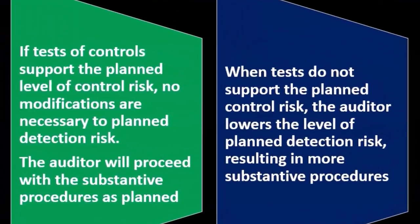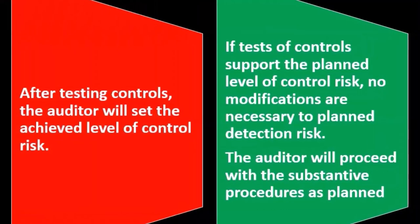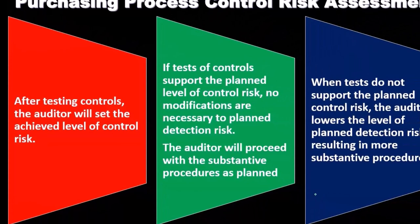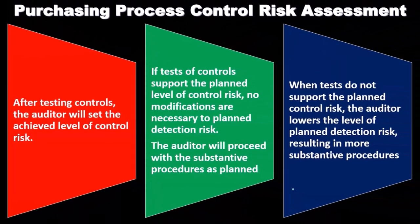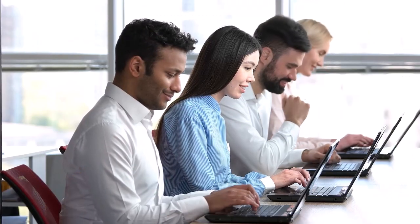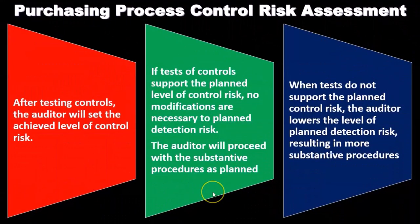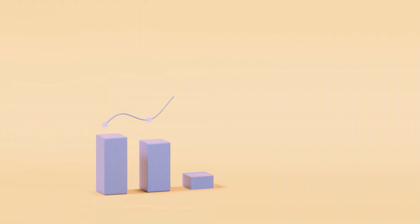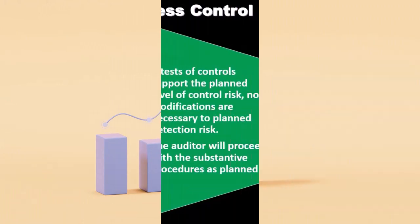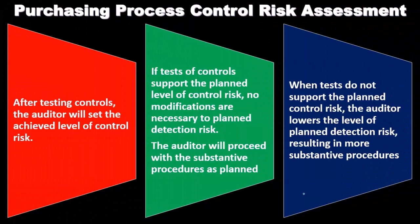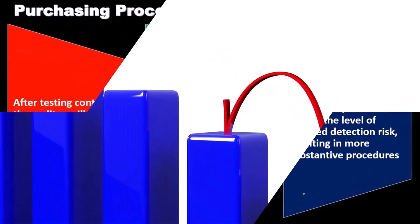If controls are weak, we increase the control risk because the controls are not going to detect errors. The detection risk — the risk that our substantive tests won't catch the error — must then be set lower. We can't rely on the controls, so control risk goes up, and we need detection risk to go down to balance things out. We decrease detection risk by doing more substantive testing.